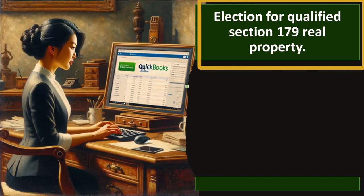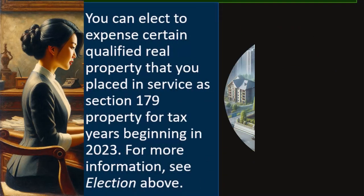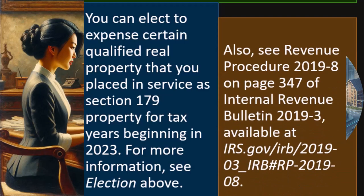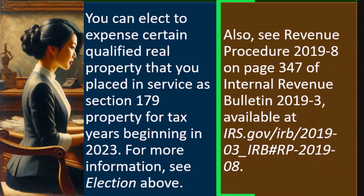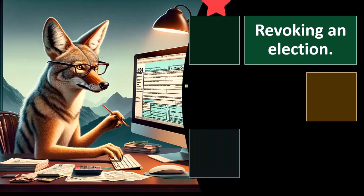Election for qualified Section 179 real property: you can elect to expense certain qualified real property placed in service as Section 179 property for tax years beginning in 2023. For more information, see revenue procedure 2019-8 on page 347 of Internal Revenue Bulletin 2019-3, available on the IRS website.